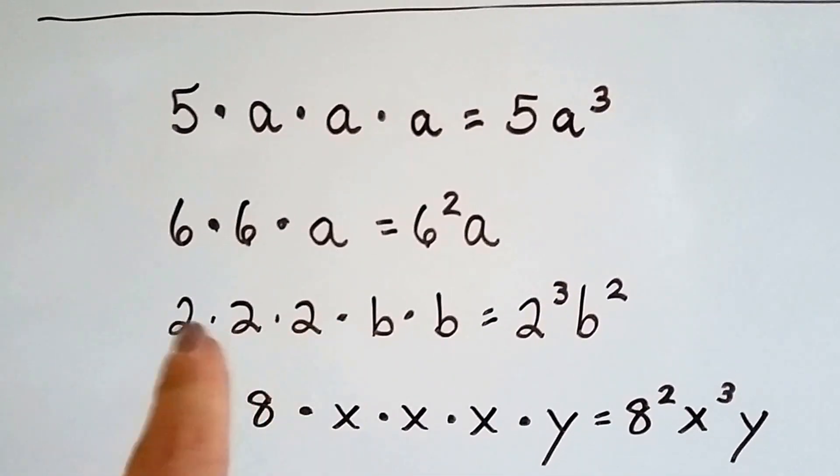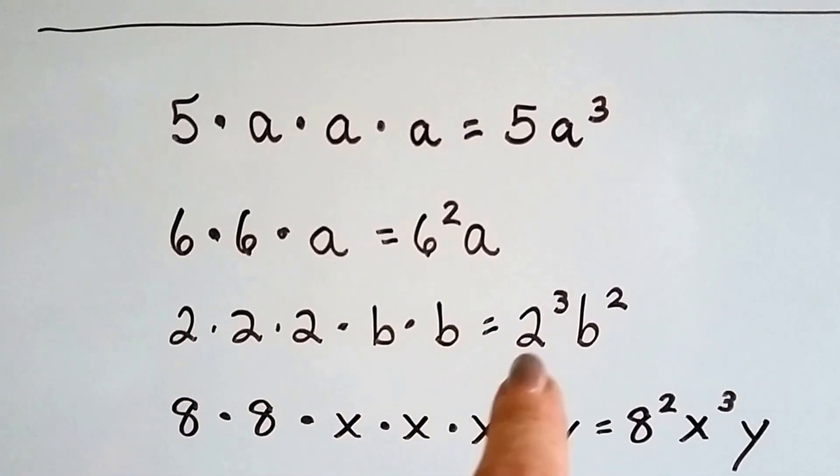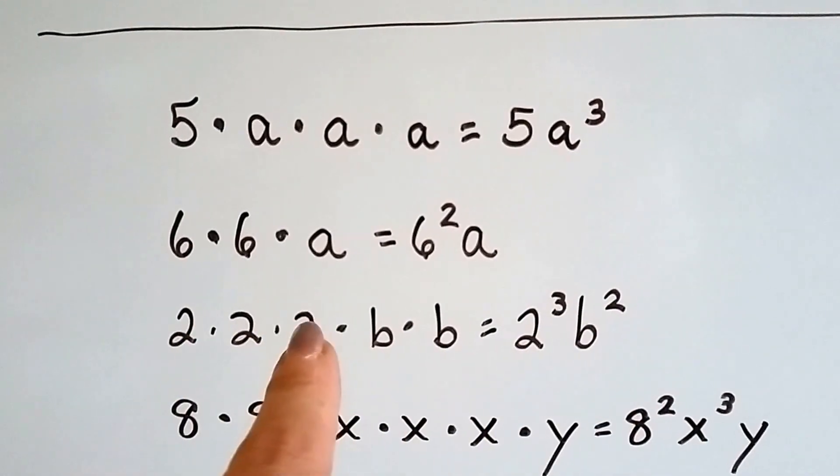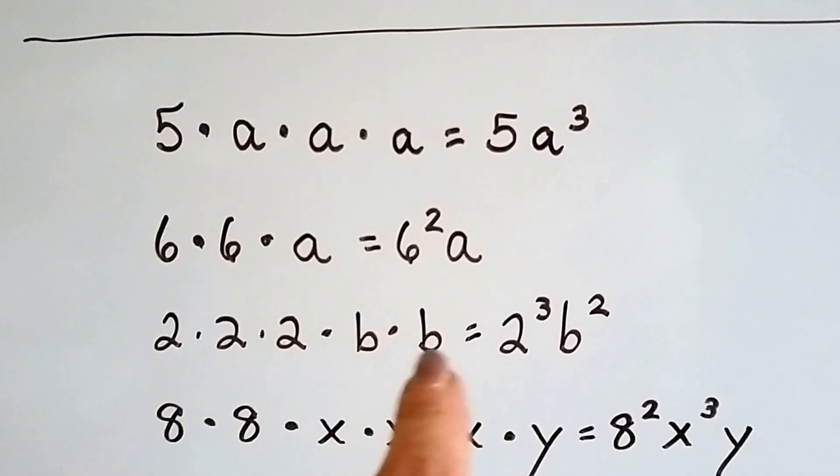If we have 3 2s multiplied together and then 2 b's, that's 2 to the third power b squared. See? 2 to the third power because there's 3 of them, and b squared because there's 2 of them.